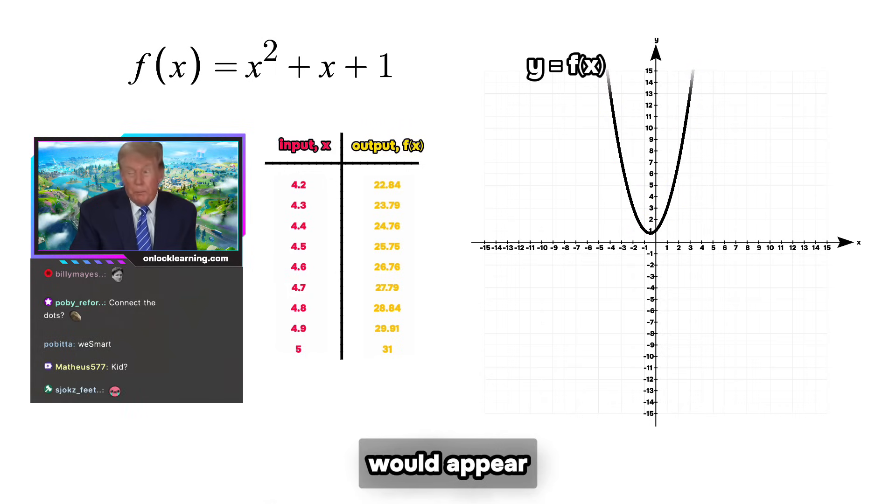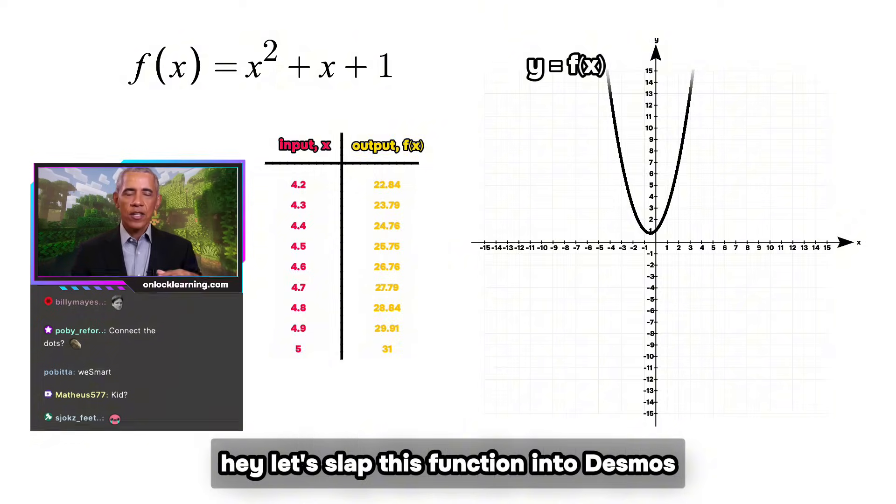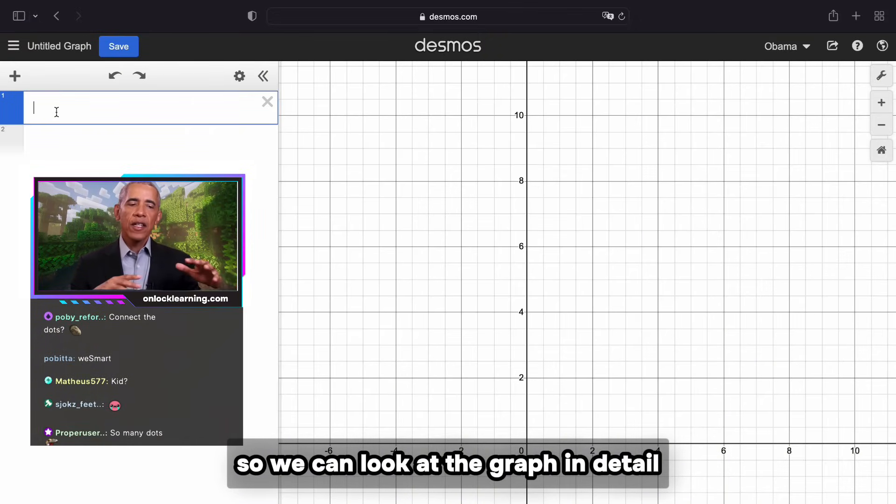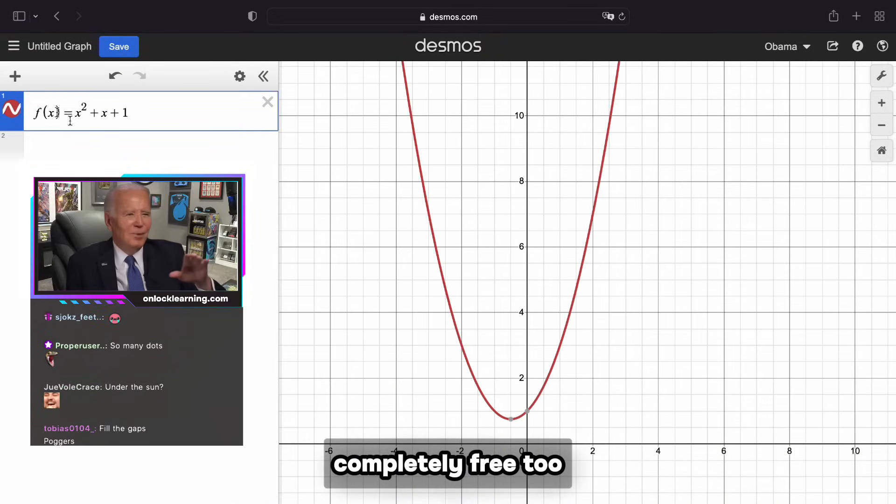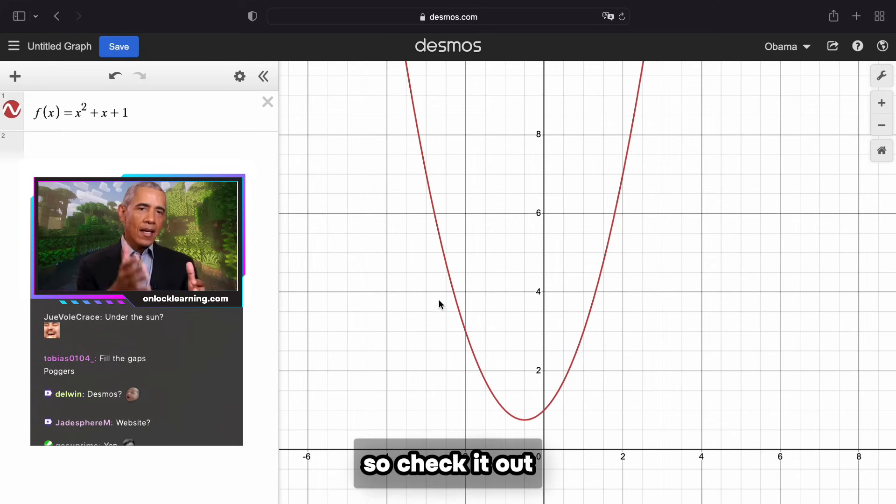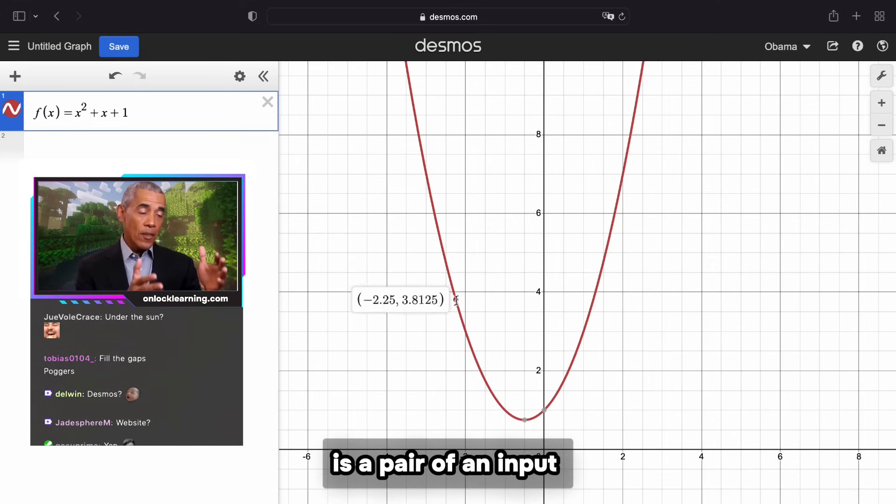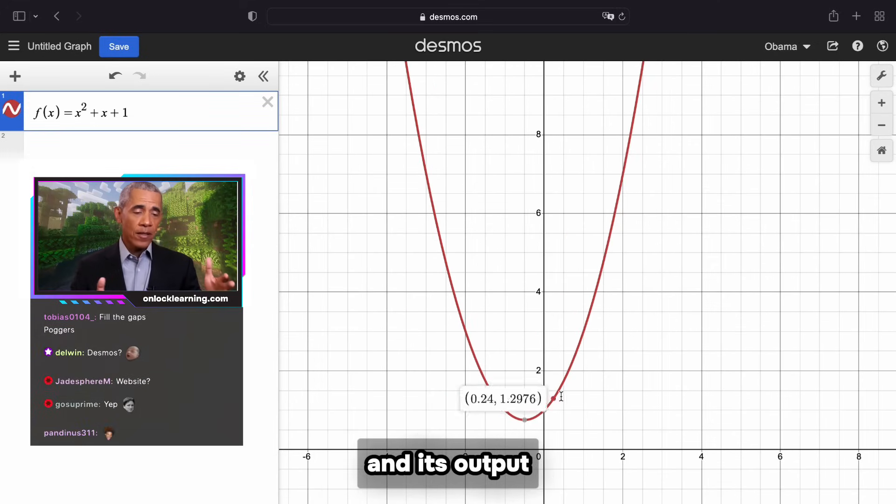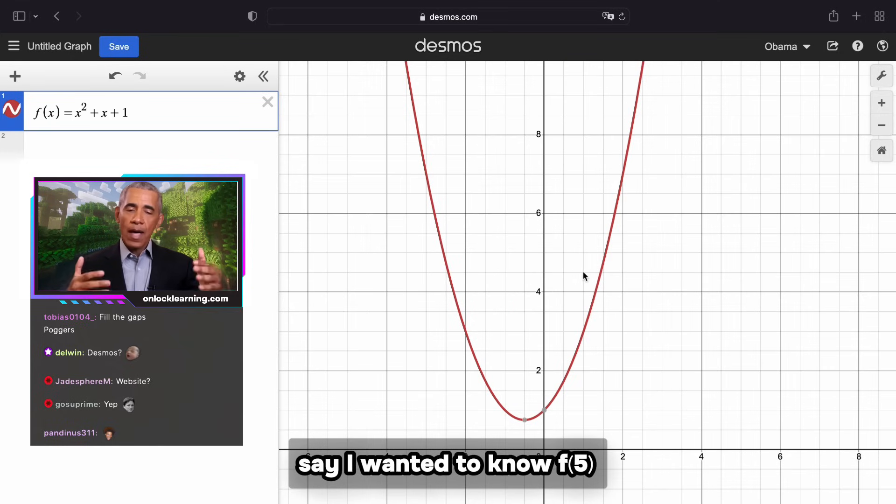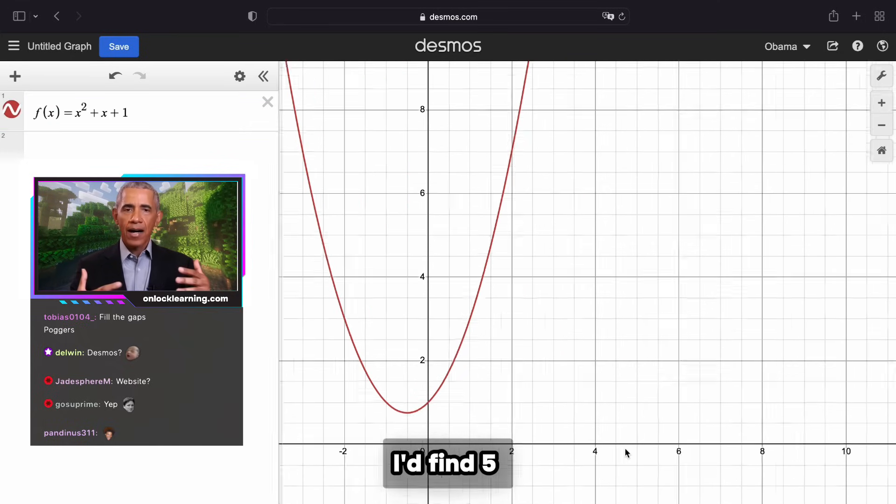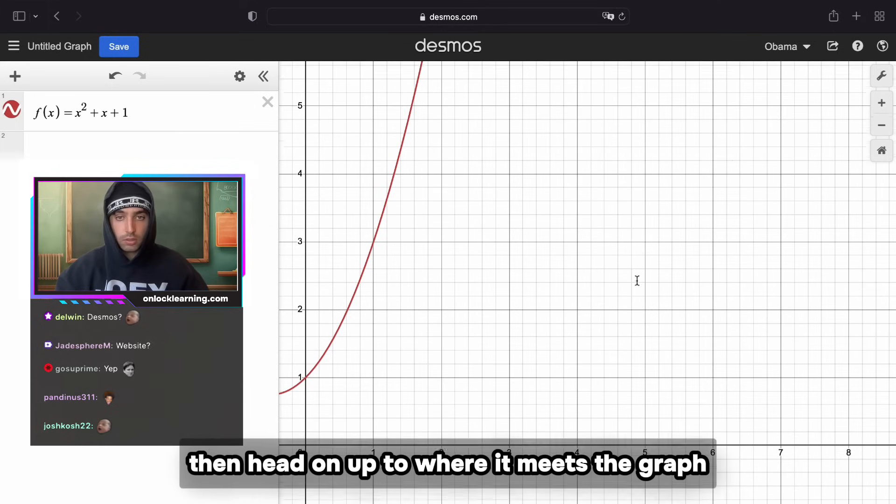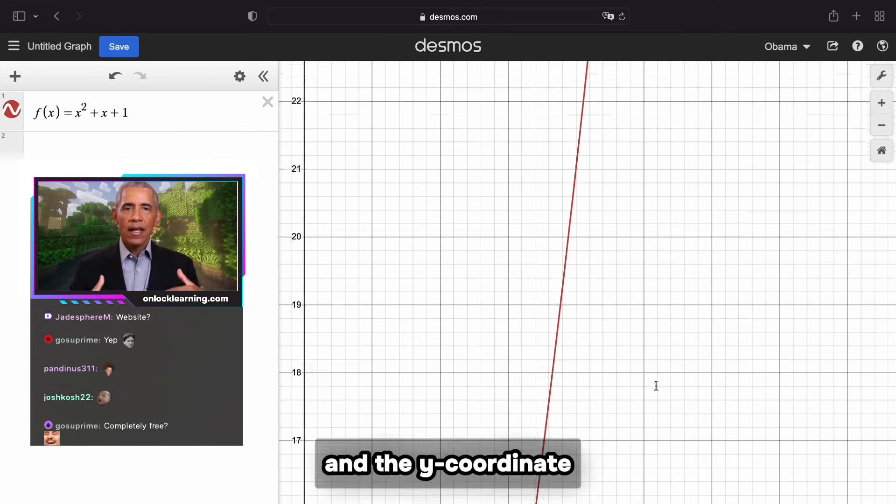Okay, let's slap this function into Desmos so we can look at the graph in detail. What is that, just like a website? Yep, completely free too. So check it out—every coordinate on this graph is a pair of an input and its output. So say I wanted to know f(5), I'd find five on the x-axis, then head on up to where it meets the graph, and the y coordinate or the height of the function would be the output, which is 31.